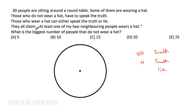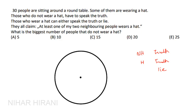They all claim that at least one of my two neighbors wears a hat. The question is: what is the biggest number of people that do not wear a hat? Let us visualize this situation. A person who is not wearing a hat has to speak truth. The claim made by each person is that at least one of their two neighboring people wears a hat.